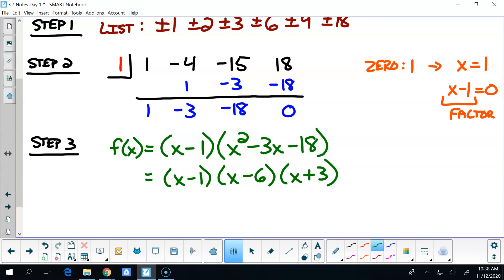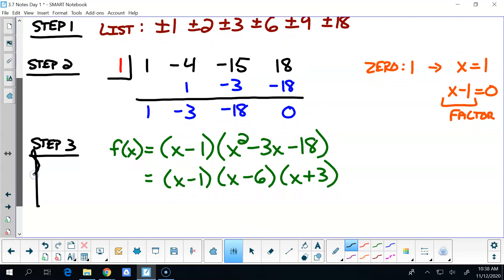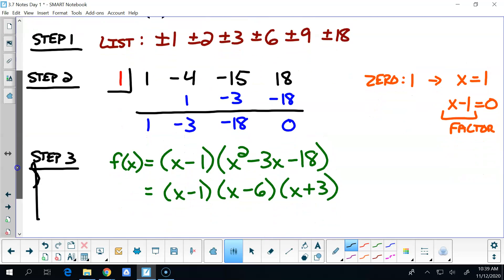That factors to be (x - 6)(x + 3). Here now we would be merging again, because now we should be back, everybody should be at the same page. Then step four. Whoa, not quite sure what happened there. We've got a little jumpy there.